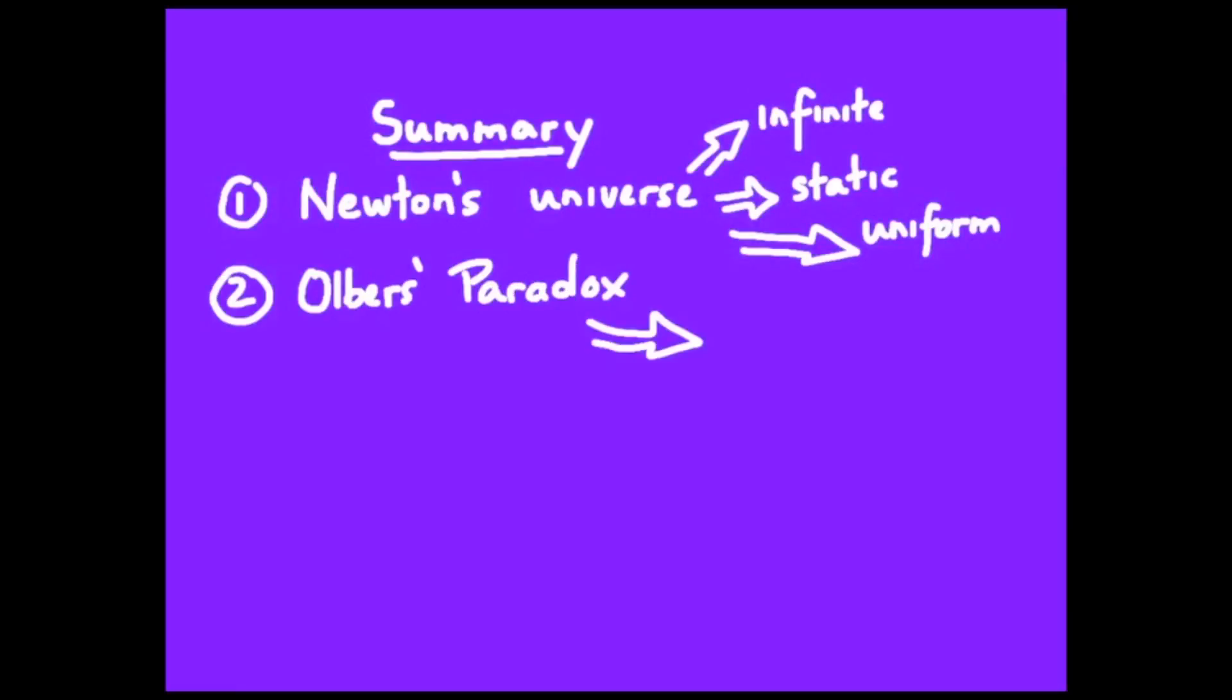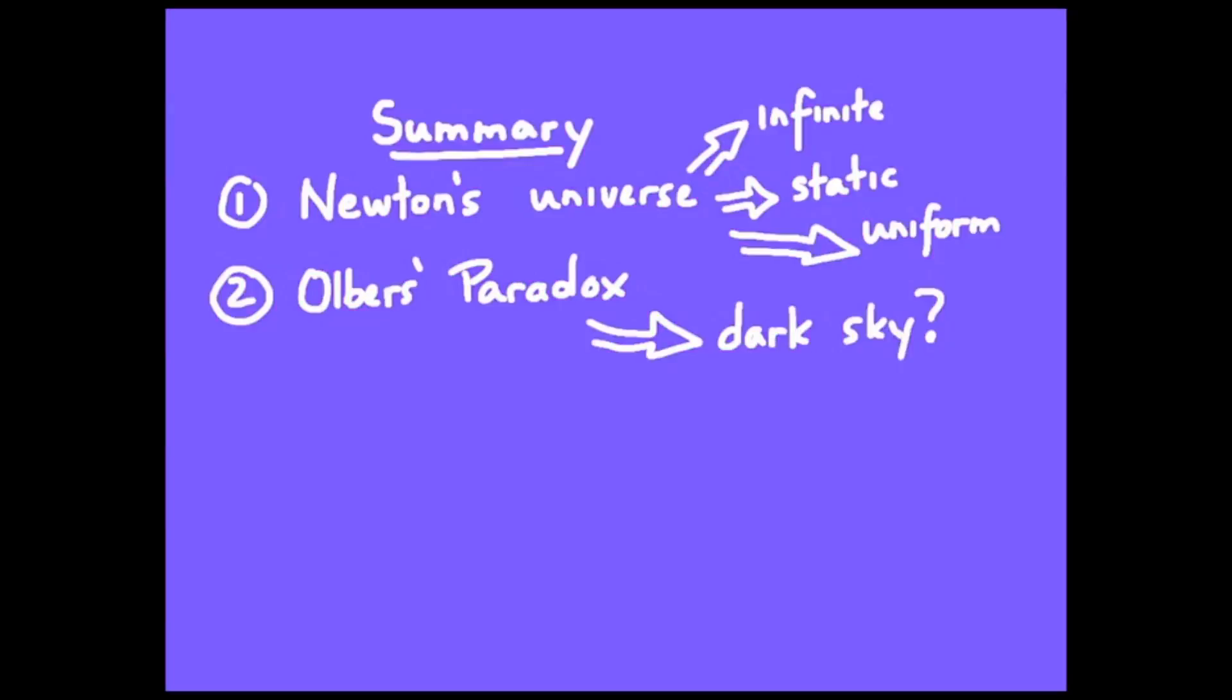Back in 1823, Olber came, used a little logic, and came up with this idea of why is the night sky dark? It shouldn't be. Olber's paradox.